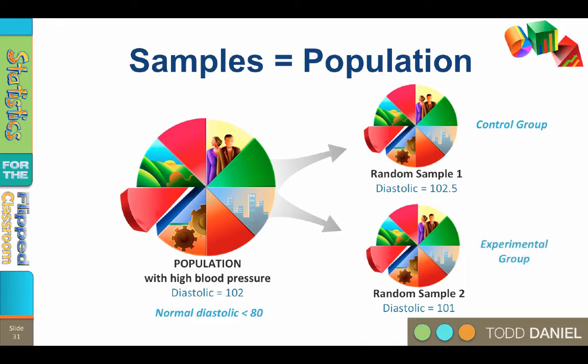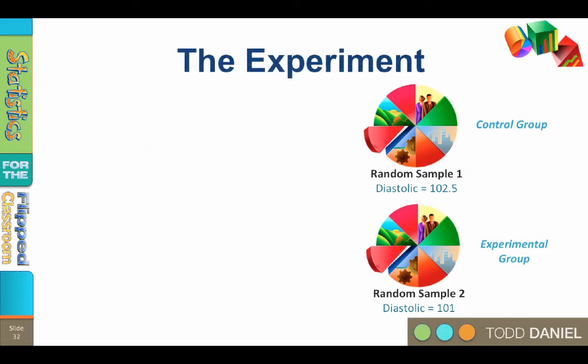We're going to assign the first sample to be the control group and the second sample to be the experimental group. For the sake of accuracy, to do an experiment properly we would not actually draw two separate samples from the population — we would draw one large sample and then randomly assign those participants to one of two groups. In any case, we would still have an experimental and control group.